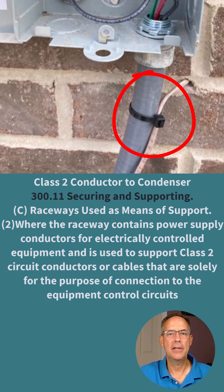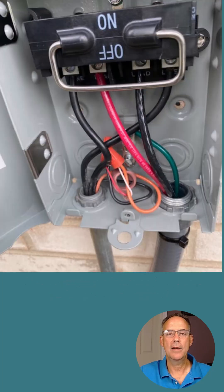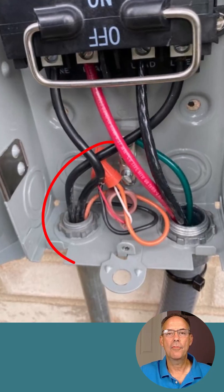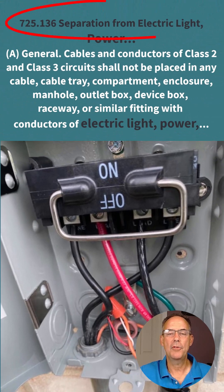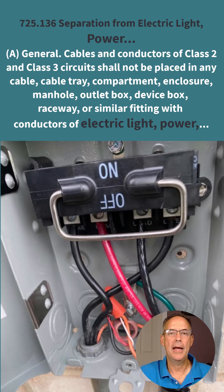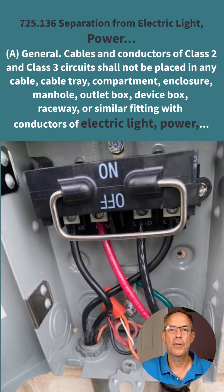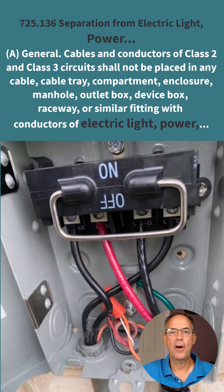The Class 2 conductor that goes from the furnace to the contactor and the AC condenser — as seen in this photo — can be run and strapped to the seal-tight conduit going to the unit itself. A common violation is running that Class 2 wire with the power conductors. If you look at 725.136 of the NEC, it tells you that you cannot run Class 2 conductors with power conductors. You have to follow the separation requirements or not run it with them at all.